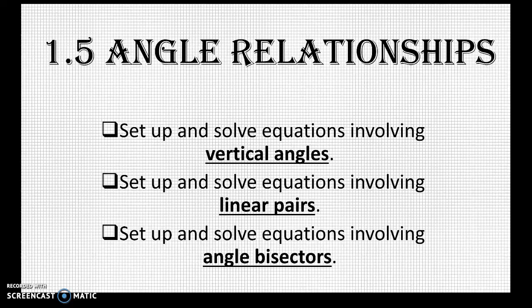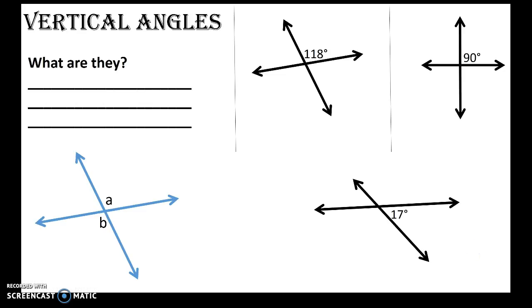Okay, so lesson 1.5 angle relationships. All you need here is the title. We'll look at specifically vertical angles, linear pairs, and angle bisectors. There's a slide that describes each of them.